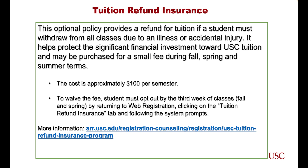The last topic I will be going over before handing it over to Kimberly will be the tuition refund insurance. This fee is automatically charged and is about $100 per semester. It is optional — you may opt out when you are registering for courses. The deadline to opt out is the third week of class and you may do so through the tuition refund insurance tab following the prompts. Tuition refund insurance provides a refund of tuition and fees to a student who must withdraw from all classes due to an illness or accidental injury. Tuition refund insurance protects the significant financial investment a student makes in tuition at USC.